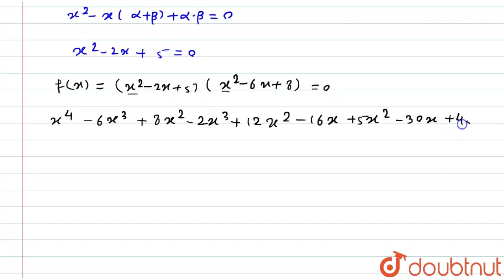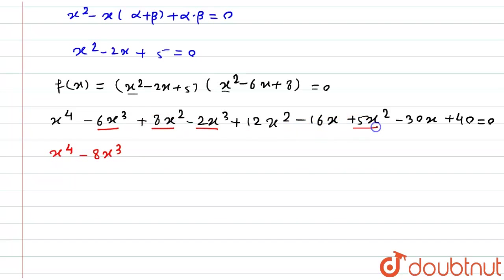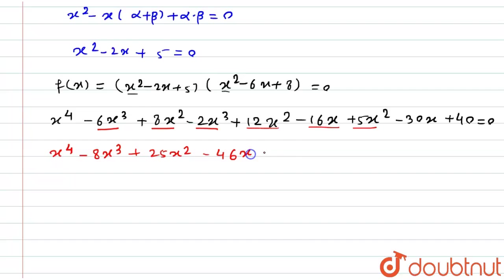Combining like terms: x to the 4th remains as is; minus 6x cubed minus 2x cubed gives minus 8x cubed; 8x squared plus 12x squared plus 5x squared gives 25x squared; minus 16x minus 30x gives minus 46x; and the constant term is 40. So the required polynomial is x⁴ minus 8x³ plus 25x² minus 46x plus 40 equals 0.